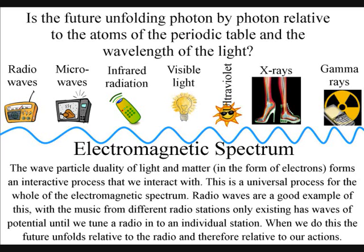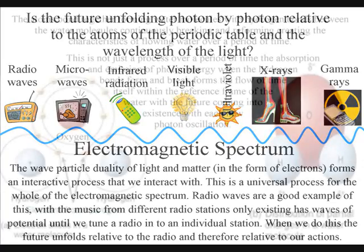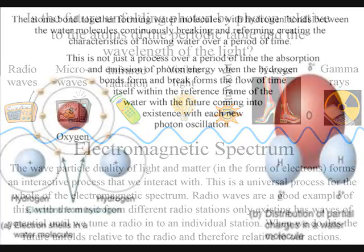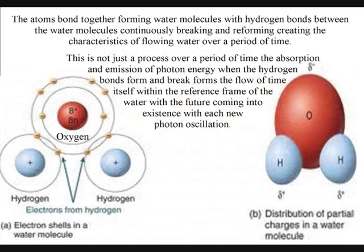This will be done using the physics and chemistry we already have — only the interpretation will change. The easiest way to see how this process works in our everyday life is to look at how oxygen and hydrogen atoms bond together to form the characteristics of water.